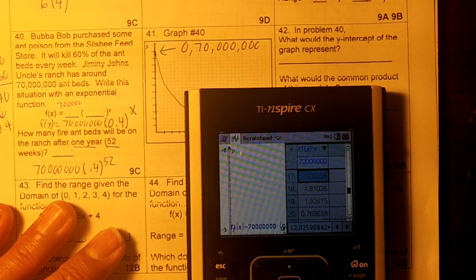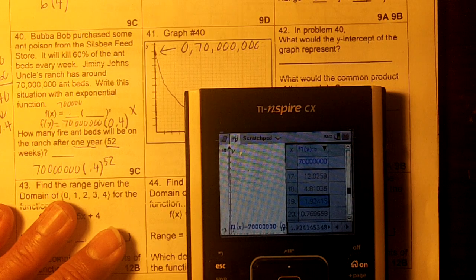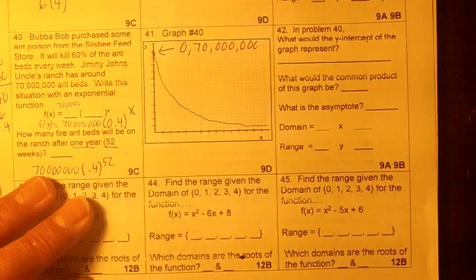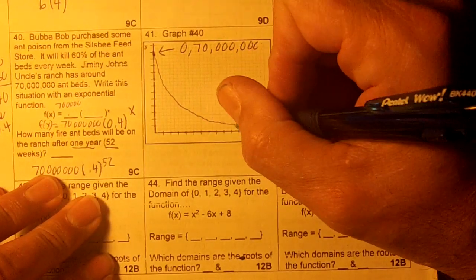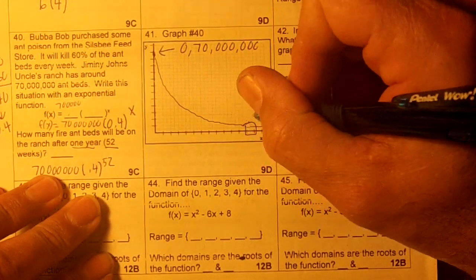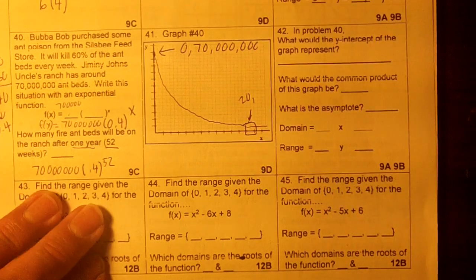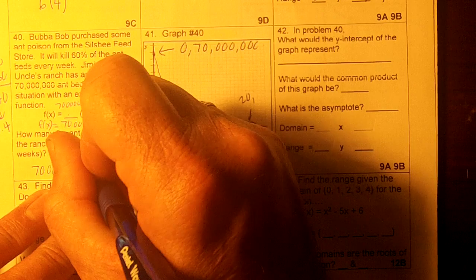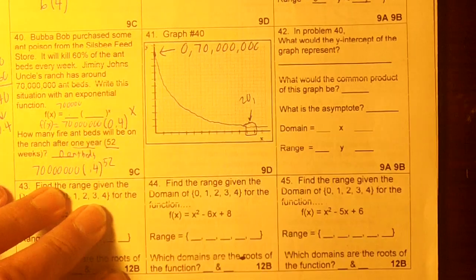So do you see at 20 weeks it goes underneath a 1? So at 17 weeks we're at 12 ant-beds, then 4 ant-beds. So at 20 weeks we're at 0 ant-beds. So right here at 20 weeks we would be at 0. So 52 would be 0 ant-beds. 0 ant-beds at 52 weeks.